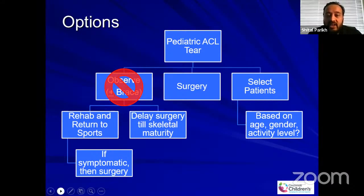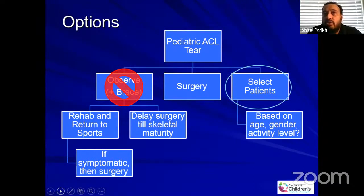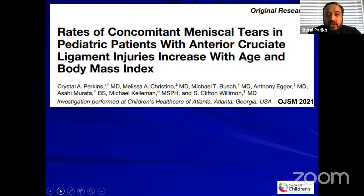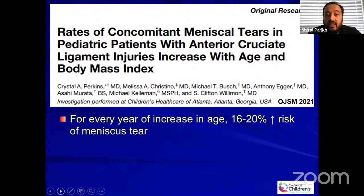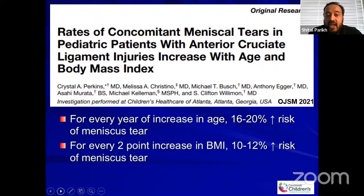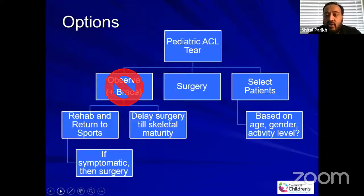Now let's look at the select patient group — where you might think that only if the patient is an athlete should we do a reconstruction. What if the patient is sedentary or obese and is not going to do much? If we look at rates of meniscus tears in ACL patients based on age and BMI, for every year of increase in age there is significant increased risk of meniscus tear. And if the patient is obese, it doesn't give them protection — it's counterproductive. For every two-point increase in BMI, there is significantly increased risk of meniscus tear.